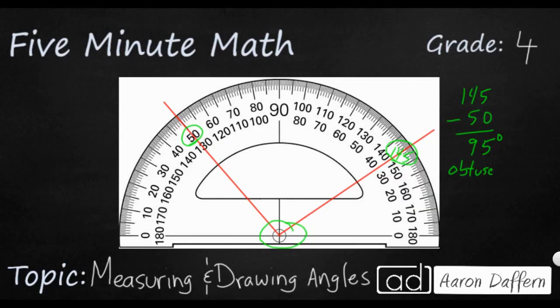But you could also do it if you wanted to take the inside number, your 130, and your inside number over here, which is between 40 and 30, so we're going to call that 35. We're going to need to borrow here, and as you notice, we're going to get the exact same answer.